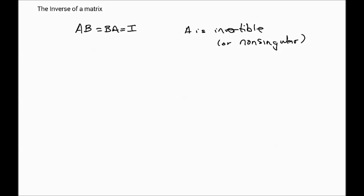The inverse of a matrix is the equivalent idea of division, which is the only operation we haven't looked at yet. We have looked at multiplication, addition, subtraction, and scalar multiplication, but not division. Importantly, there are no fractions in matrix algebra — you cannot have one matrix over another, like A over B. The inverse is represented by the minus-one power, which is symbolic rather than a literal power, so please don't interpret this as one over A — there is no such thing as one over a matrix.